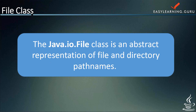The File class represents file and directory path names in an abstract manner. It is used for creation of files and directories, file searching, and file deletion. We have the syntax for creating a new file: you write 'File' then give it a parent. The syntax creates a new file by converting the given path name string into an abstract path. You give the parent and the child name.